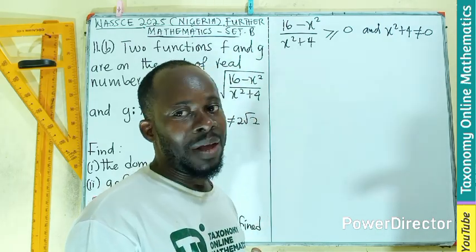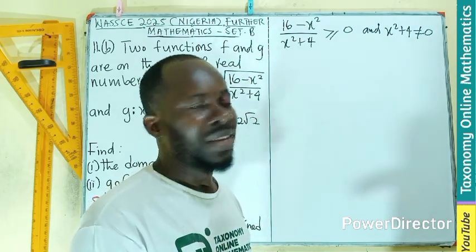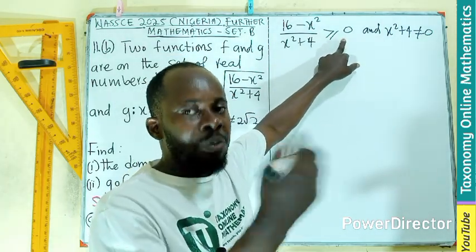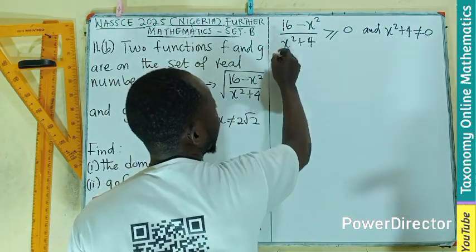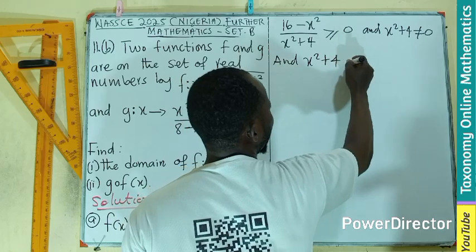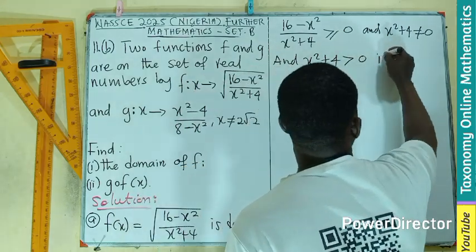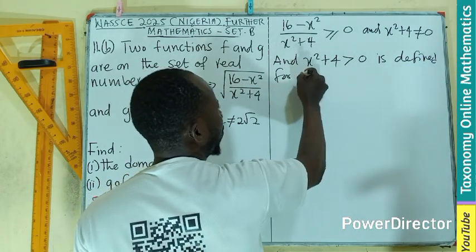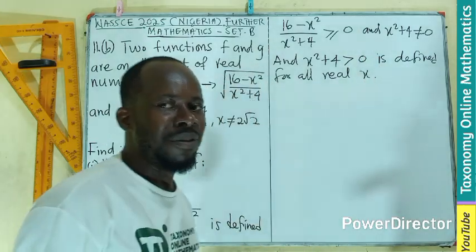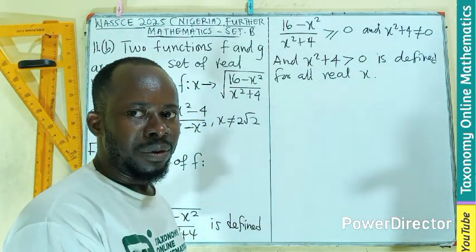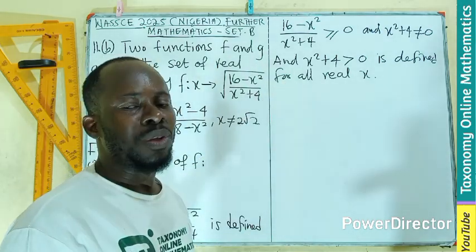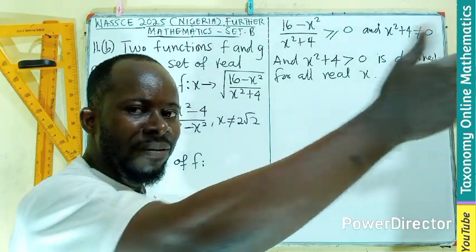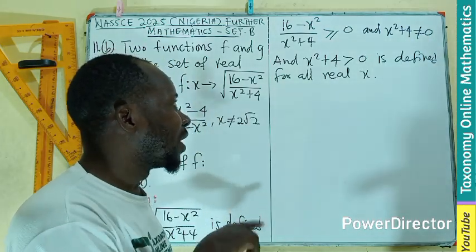Looking at the denominator, x squared plus 4 is greater than zero for all real values. Every number I pick will make the denominator defined — it will never give a negative. So our condition does not depend on the denominator; we only need to worry about the numerator giving us negative values.